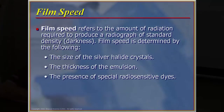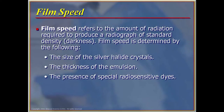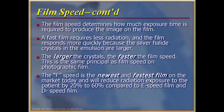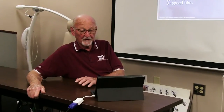Film speed refers to the amount of radiation required to produce a radiograph of standard density or darkness. Speed is determined by the size of the silver halide crystals, the thickness of the emulsion, and the presence of special radio-sensitive dyes incorporated into the emulsion. The film speed determines how much exposure time is required to produce the image. A fast film requires less radiation, and the film responds more quickly to processing because the silver halide crystals in the emulsion are larger. The larger the crystals, the faster the film speed — the same principle as photographic film.